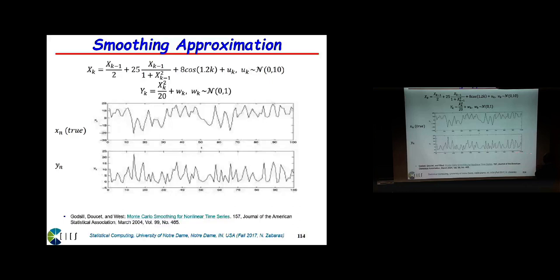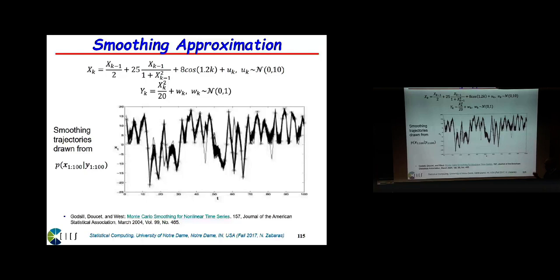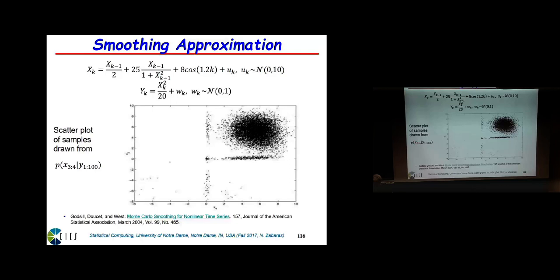How do you estimate both theta and the state at the same time — one parameter is static, the other evolves with time? Someone might say: form a joint update of the states and parameters simultaneously. You can even make theta look dynamic by enhancing your dynamical model to involve a delta function saying the theta parameters don't change. But it won't work.